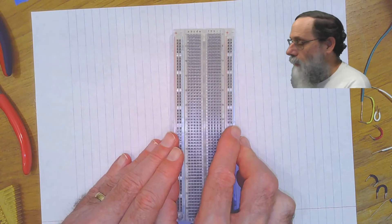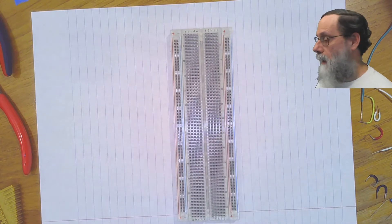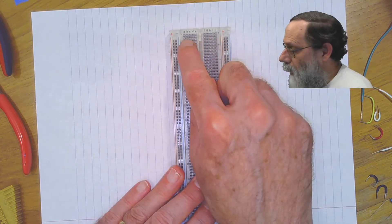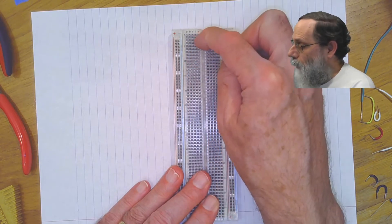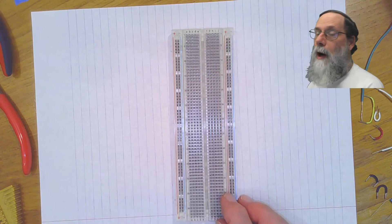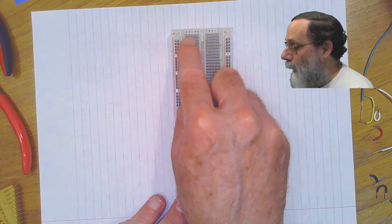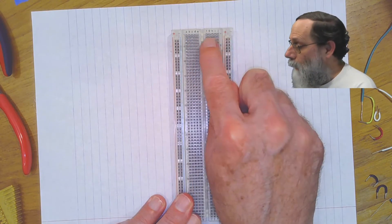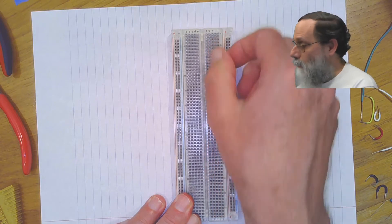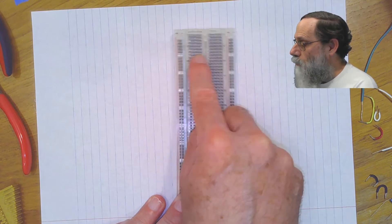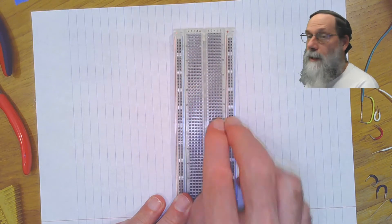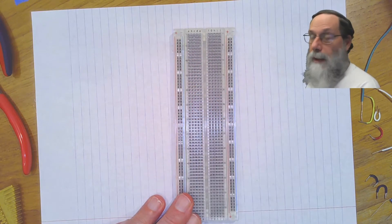The way the connections are done in a breadboard is that across each row here, the five holes are connected together. So there are five holes together on this side, five holes connect together on this side, but nothing crosses this divide in the middle. Each one of these rows gives me two sets of five connected holes.